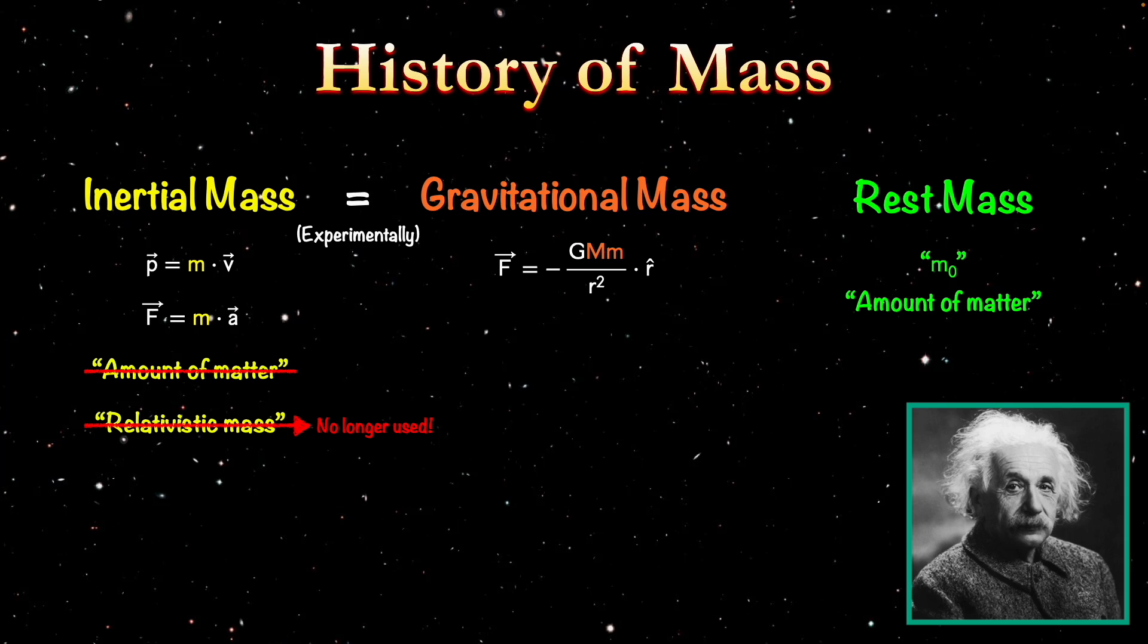So what is the inertial mass now that we have special relativity? Well, we just saw what it is. It's basically just the energy. So we don't need a new name for it. It's no different from energy up to a factor of c squared. So why bother calling it mass in the first place? Let's just call it the energy.